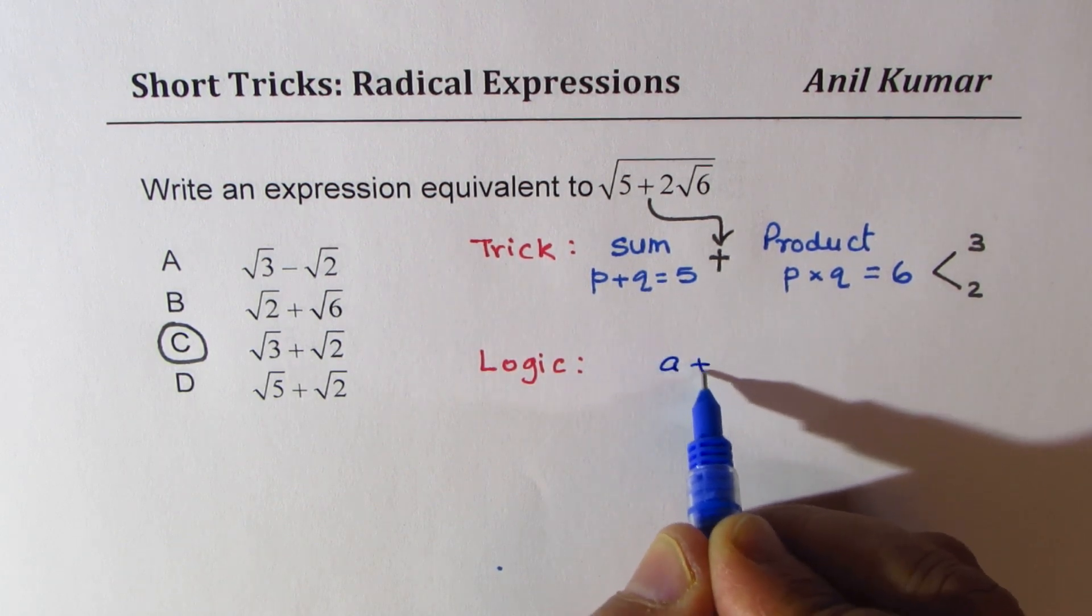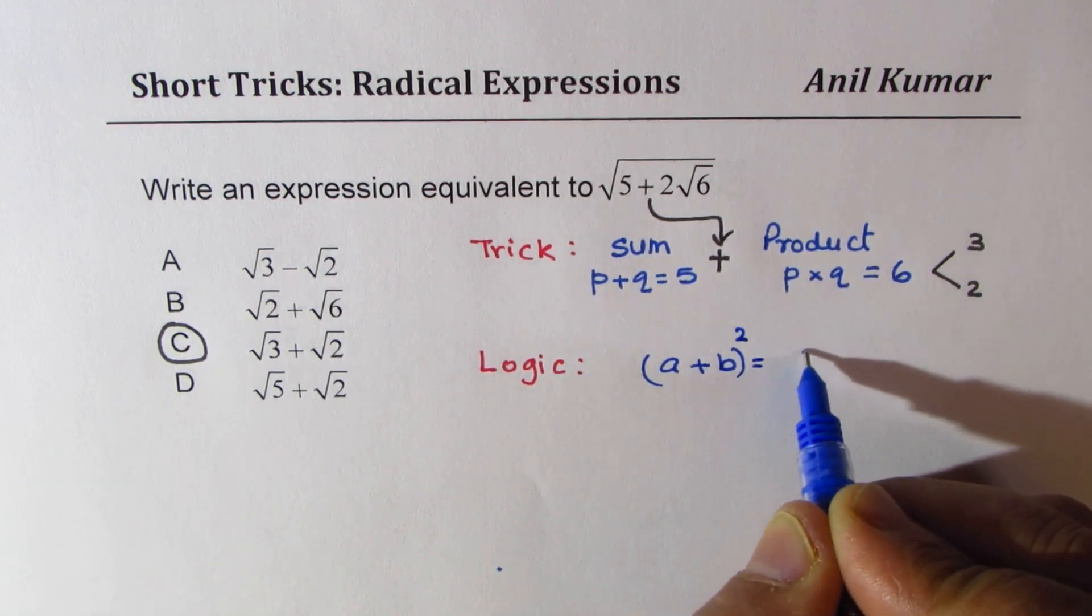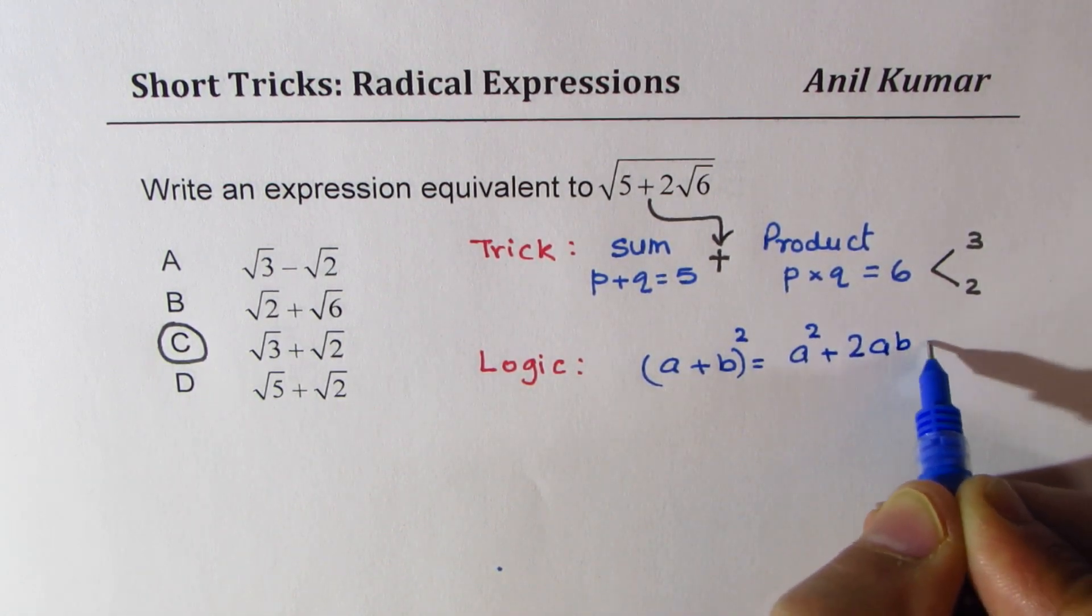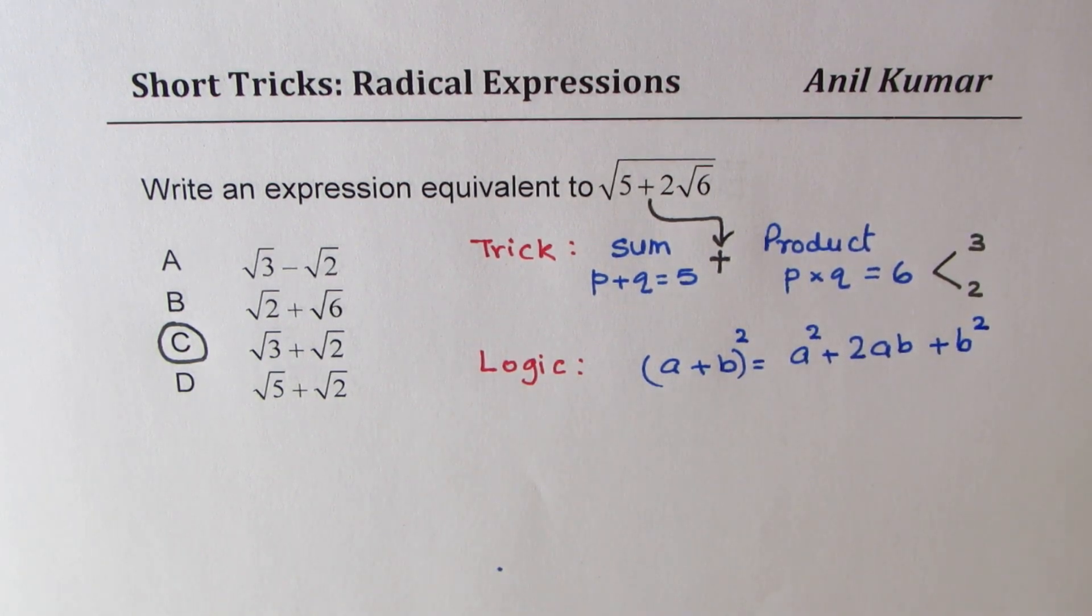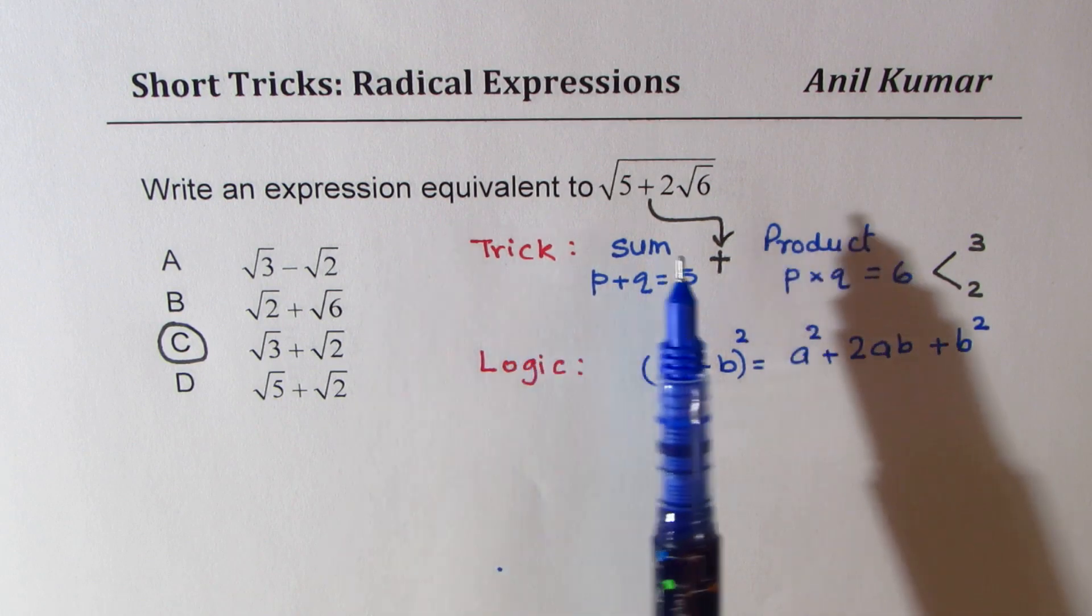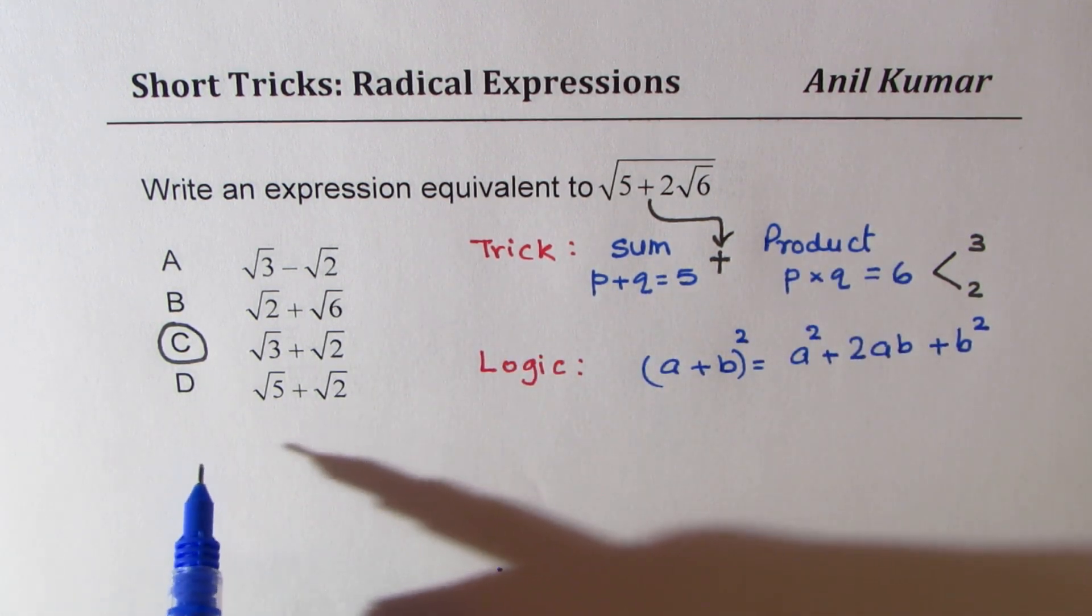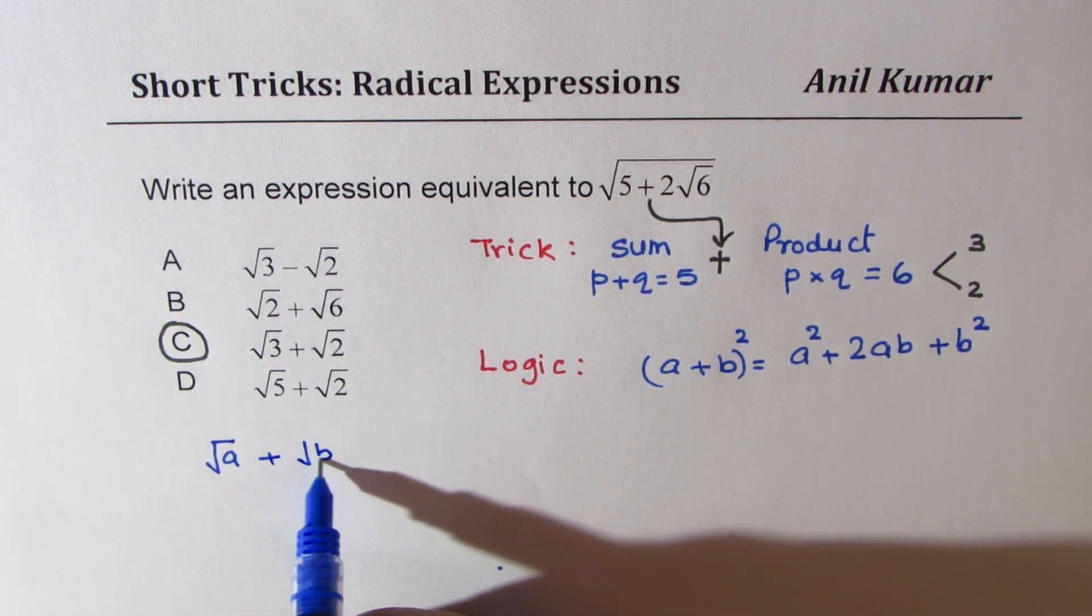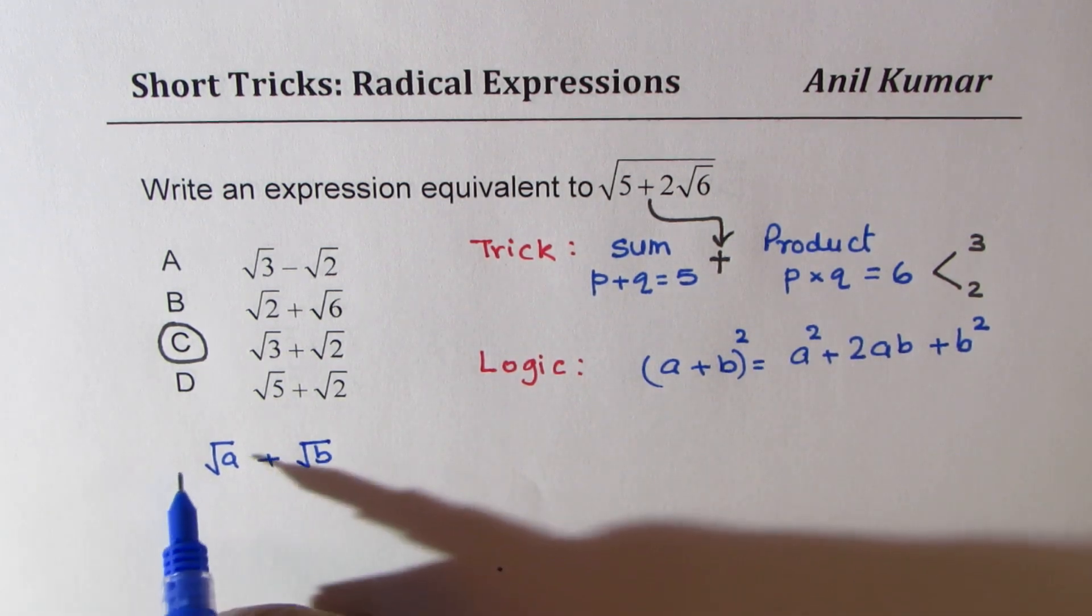What is A plus B whole square equals to? It is A square plus 2AB plus B square, right? This is a very standard formula. Now we are working with radicals. So let's look into something like square root of A plus square root of B, whole square.